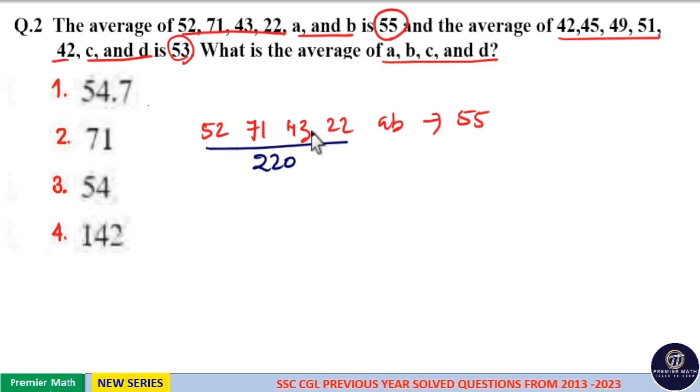So the real sum is equal to 52 plus 71 is 123, plus 43 is 166, plus 22 is 188. 188 is the real sum.